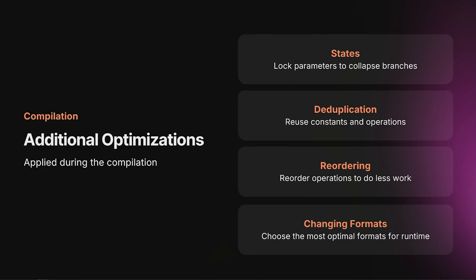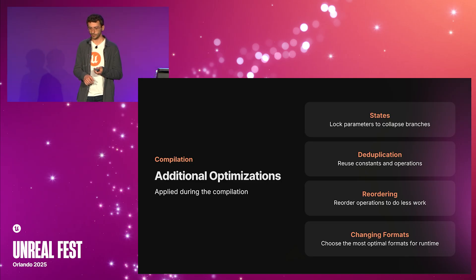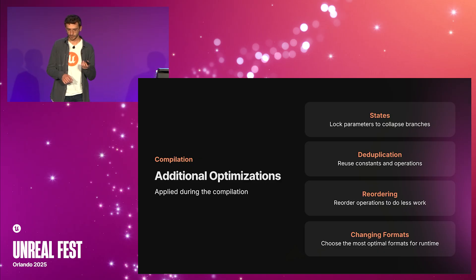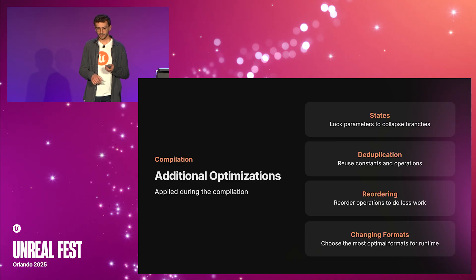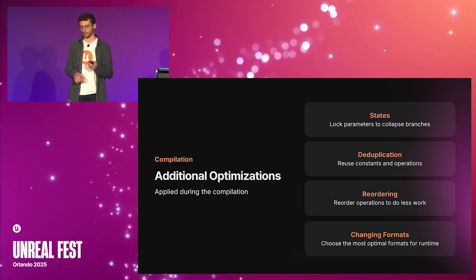Other optimizations applied during compilation are: states, where developers can lock parameters so Mutable can collapse more branches — especially useful for real-time customization lockers; deduplication, where Mutable tries to reuse as much data as possible; reordering, where operators are reordered to do less work; and finally, Mutable can change meshes and textures to their most optimal formats for runtime.